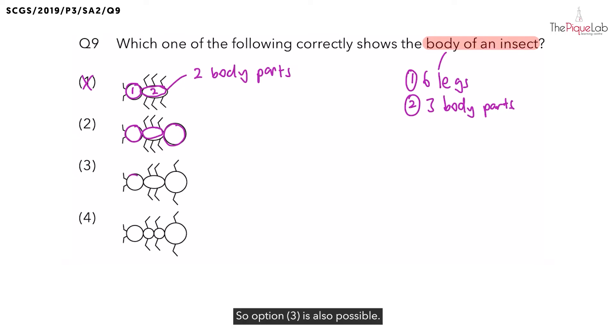Now what about option 4? For option 4, does this insect have six legs? Yes. But does the insect in option 4 have three body parts? No. When we look at the insect in option 4, there is one, two, three, and four body parts in total. So because of that, can option 4 be the answer? No, so let's cross out option 4.